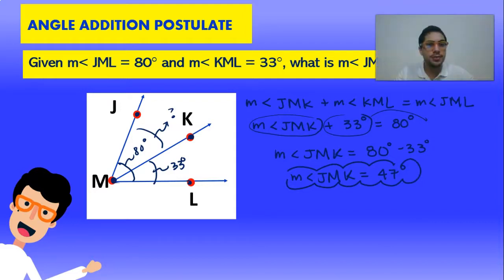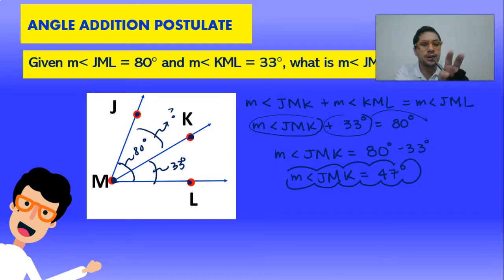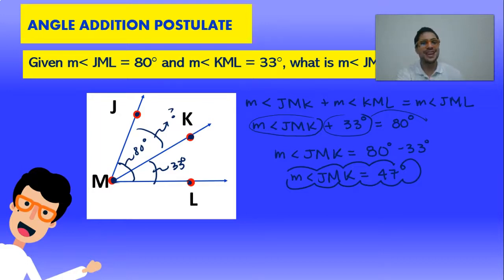Just remember that whenever we have a point in the middle of a bigger angle, we can add the two smaller angles to get the whole angle. Review the angle addition postulate and try doing this problem over and over again so that you're prepared for more problems to come. I'll see you on the next one, bye guys!